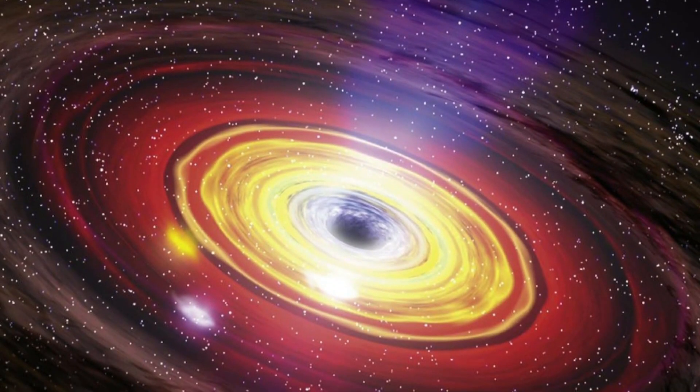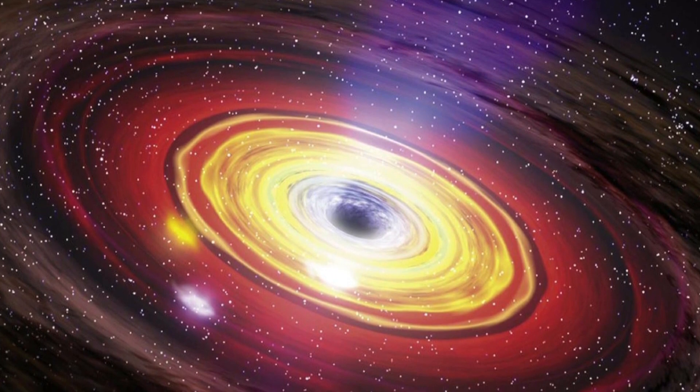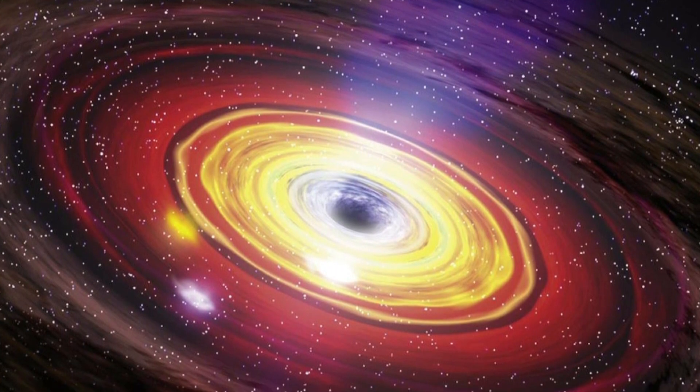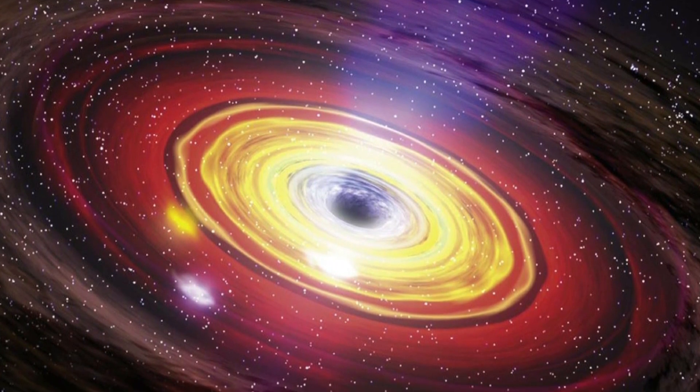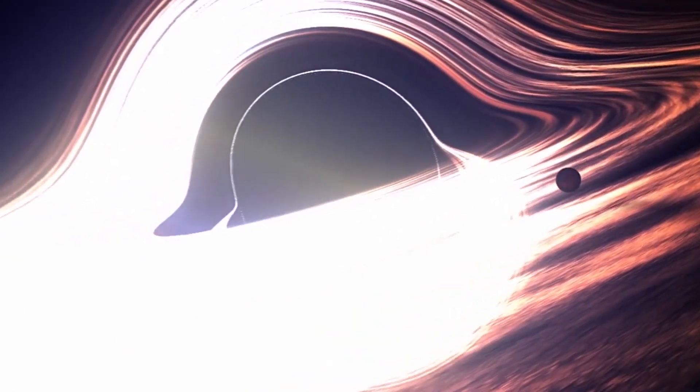A supermassive black hole's mass and the mass of the gigantic bulge that surrounds it have an odd linear connection in which the bigger the black hole, the more matter there is in the bulge. This suggests some form of co-evolution between the two, but we're unsure of the nature of this link and what it means.